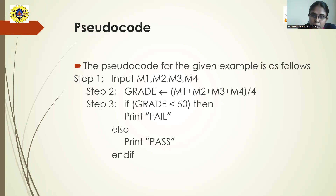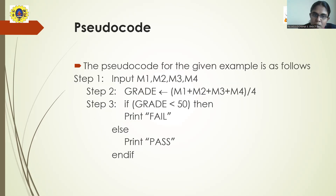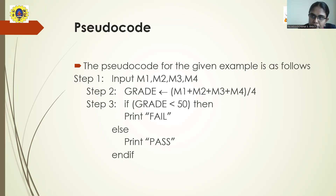In the algorithm, we write 'if average is below 50' in words, but in pseudocode you have to use operators. 'Below' means less than, so we use the less than operator. Instead of 'average', we use the variable name 'grade'. In an algorithm you can write 'less than' in words, but in pseudocode you must use the comparison operator. So: if grade < 50, then print 'fail'. If this condition is false, else print 'pass'. Since we opened an if block, it has to be terminated with 'end if'. This is the complete pseudocode for that particular problem.